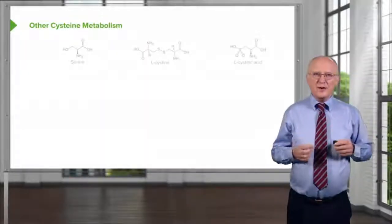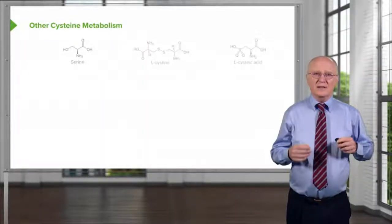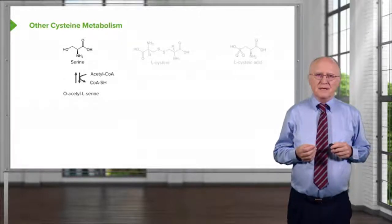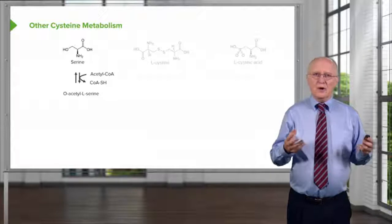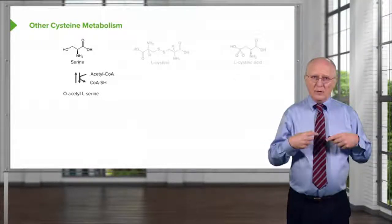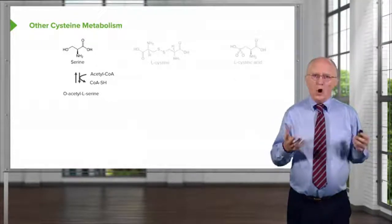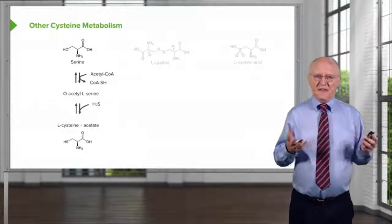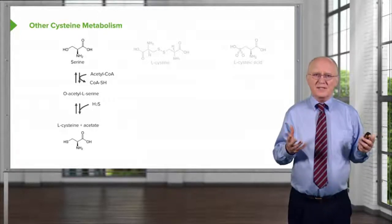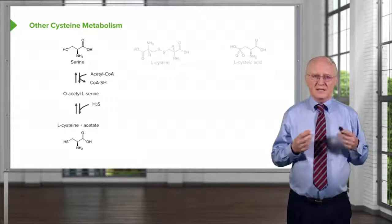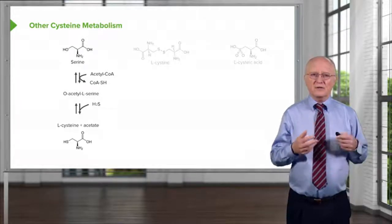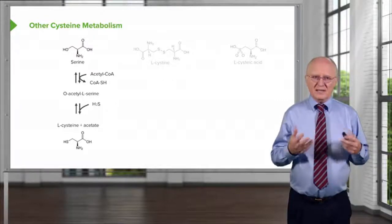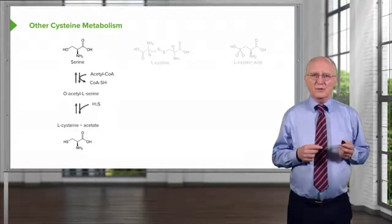There are at least three other ways of making cysteine, illustrated here. One of these comes from serine directly. In this process, acetyl-CoA donates an acetyl group to serine to make O-acetyl-L-serine. In the next step, the sulfur that ends up in cysteine comes from the addition of hydrogen sulfide. This splits out the acetate in the process, leaving behind cysteine for making proteins.